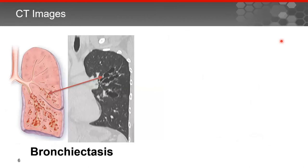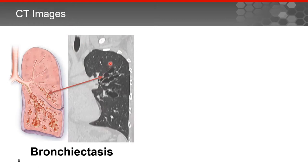For bronchiectasis on CT imaging, a coronal or long-section view shows the windpipe at the top, the heart, and the left lung. Airways normally are difficult to see and are about the same diameter as adjacent blood vessels. In bronchiectasis, however, the airways are very dilated — the interior appears black with air — and the outline of the airway walls is visible. These areas of very abnormal, dilated airways are the hallmark of bronchiectasis on CT.